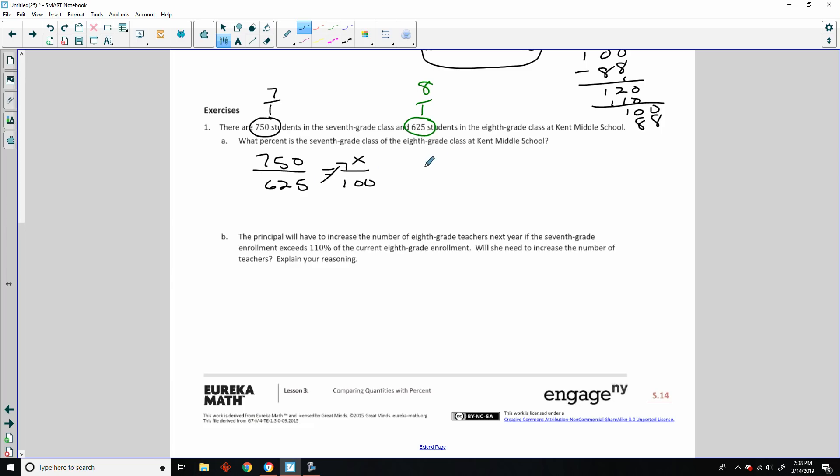So when I do the cross multiplication, I get 625x equals 75,000. 750 times 100 is 75,000. Divide by 625, and just to save time, I will use my phone. And I will say, hey Siri, what's 75,000 divided by 625? 75,000 divided by 625 is 120. So since the 7th grade is greater than the 8th grade, you should expect to see more than 100%, and sure enough, we got 120%.